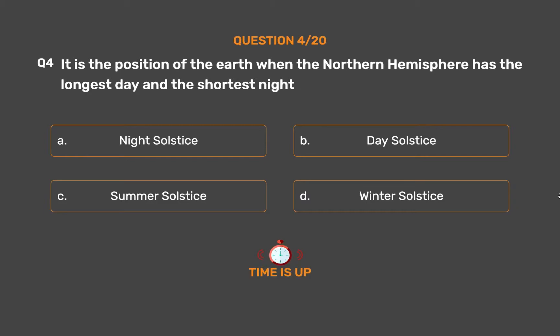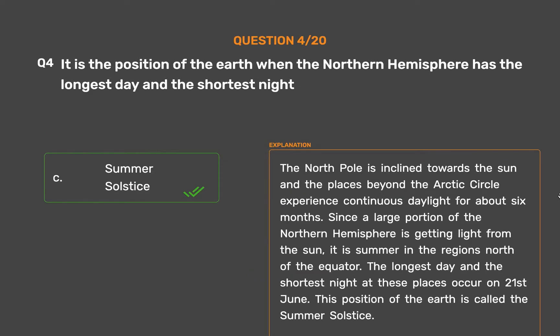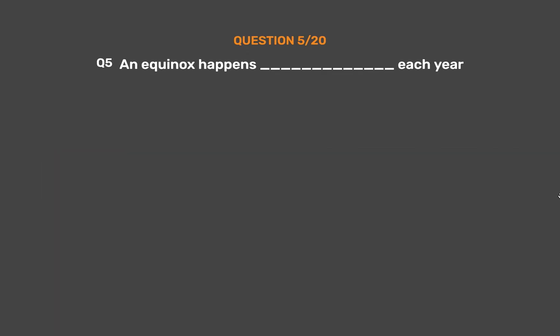The correct answer is Option C: Summer Solstice. The North Pole is inclined towards the Sun and the places beyond the Arctic Circle experience continuous daylight for about six months. Since a large portion of the Northern Hemisphere is getting light from the Sun, it is summer in the regions north of the equator. The longest day and shortest night occur on 21st June. This position is called the Summer Solstice.